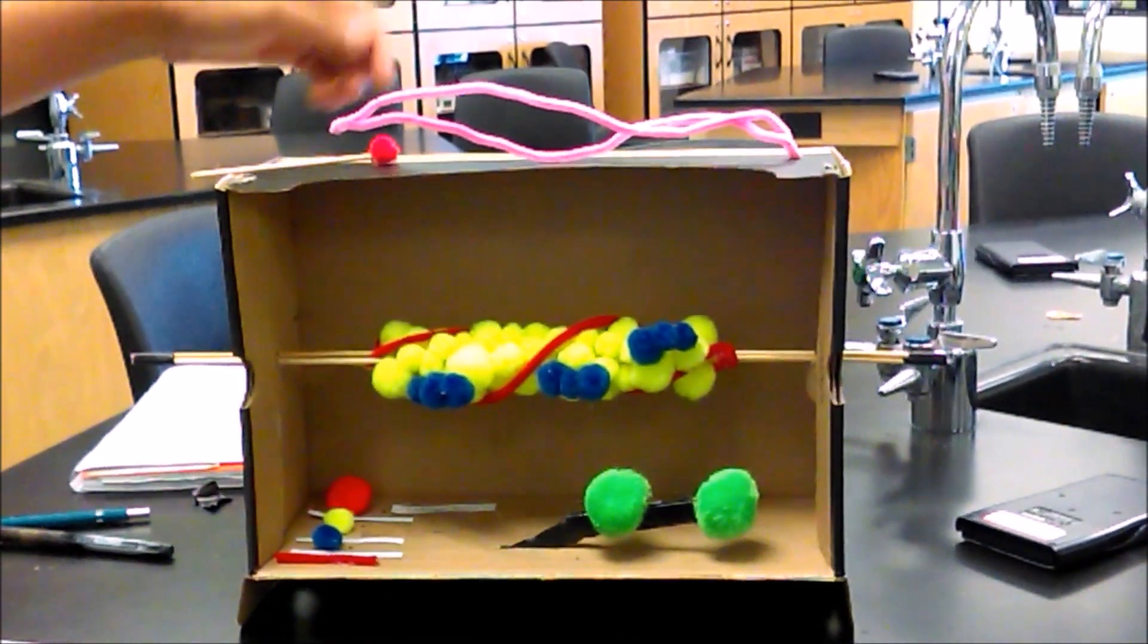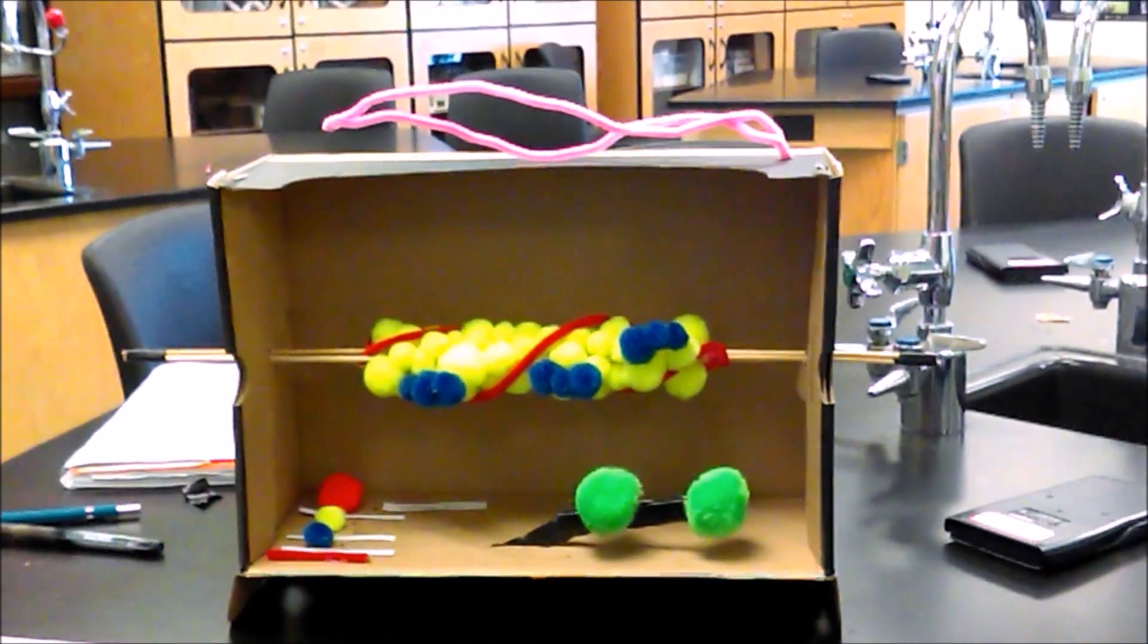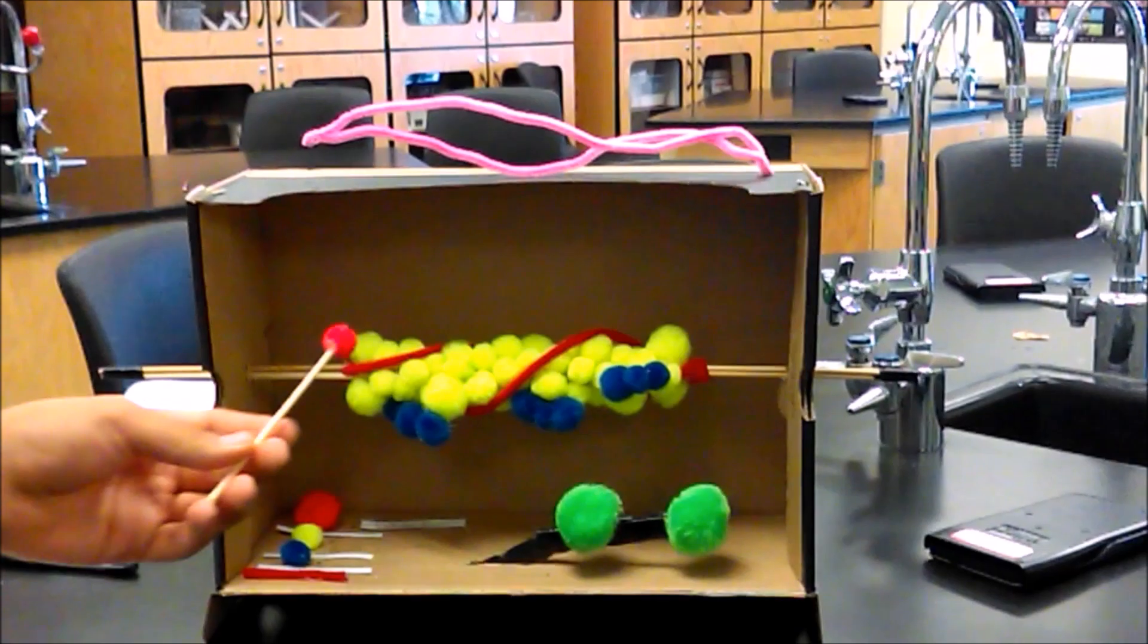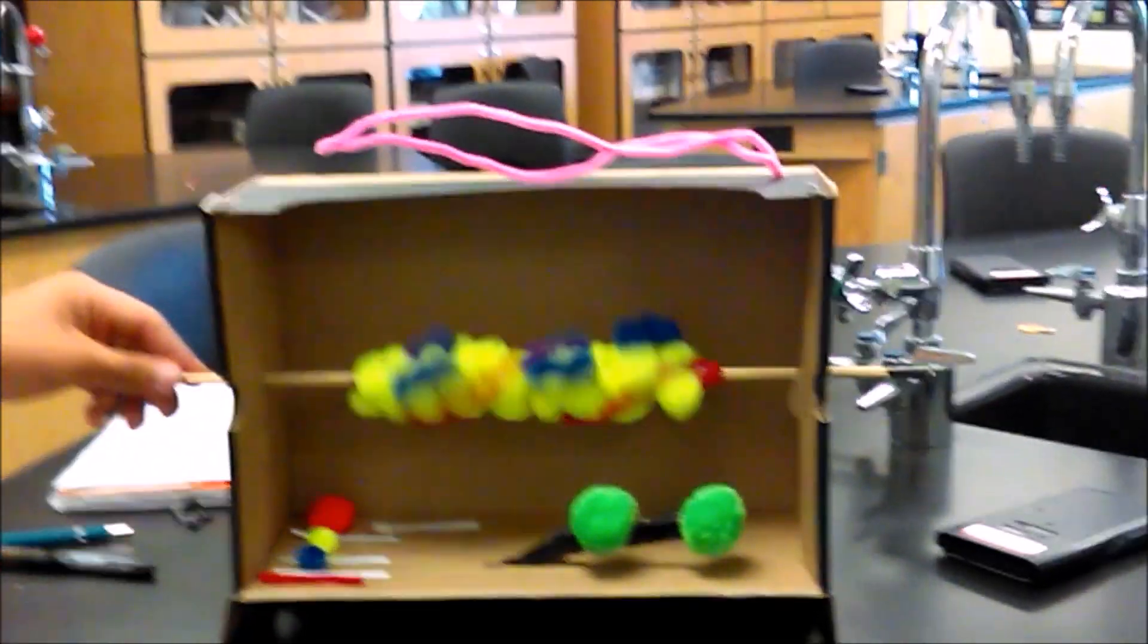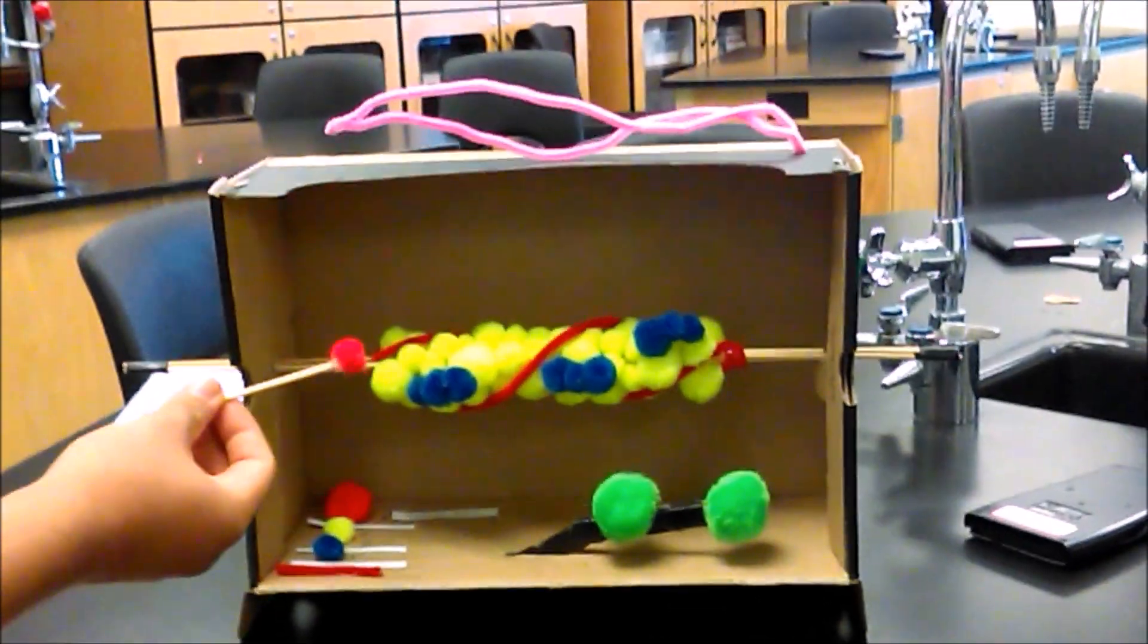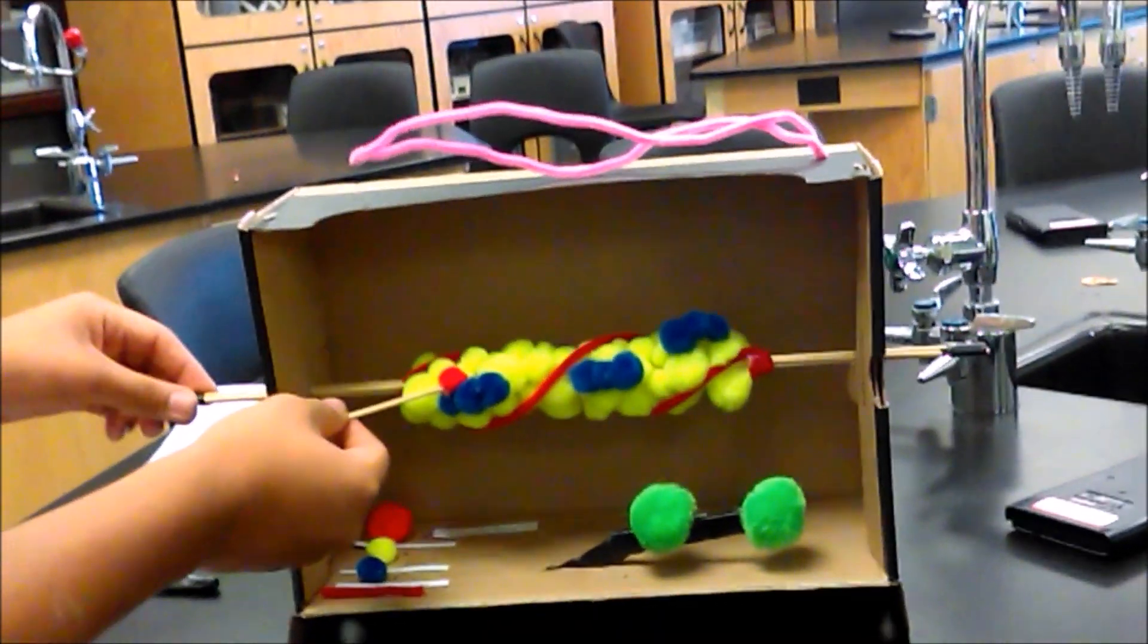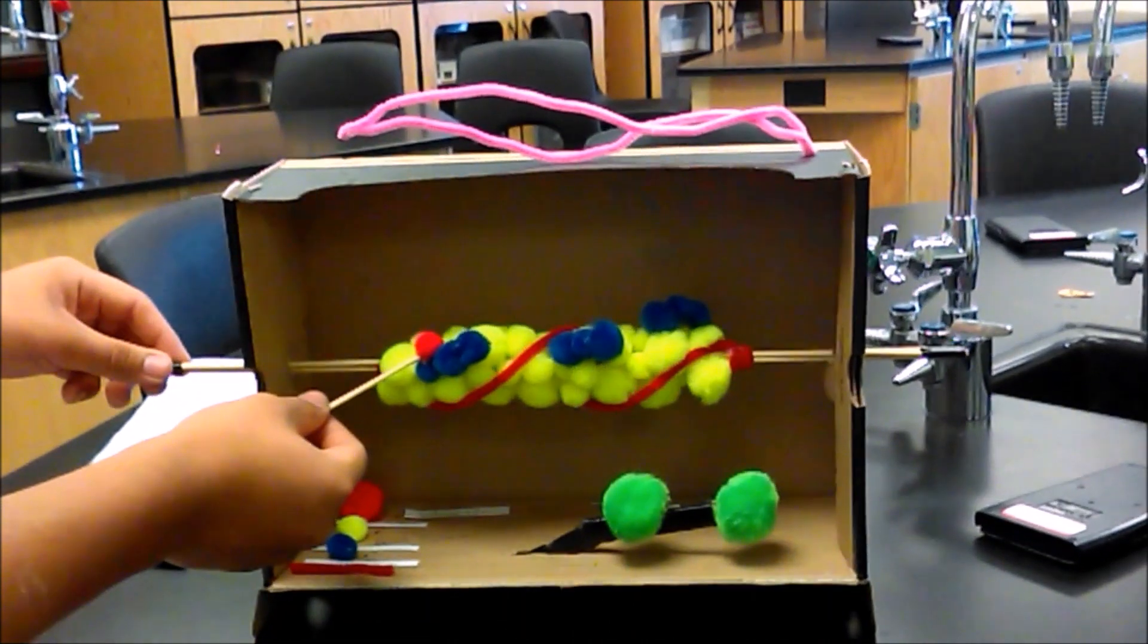To start it off, our brain sends signals to the neuromuscular junction, which then sends signals to the sarcoplasmic reticulum, which then releases calcium ions into the thin filament. Once the sarcoplasmic reticulum releases calcium ions, the calcium ions connect to the actin and troponin, which causes the ATP, ADP, and phosphorus in the myosin to activate.